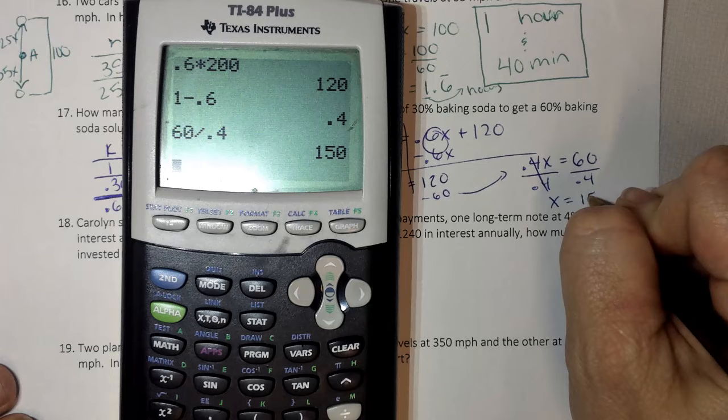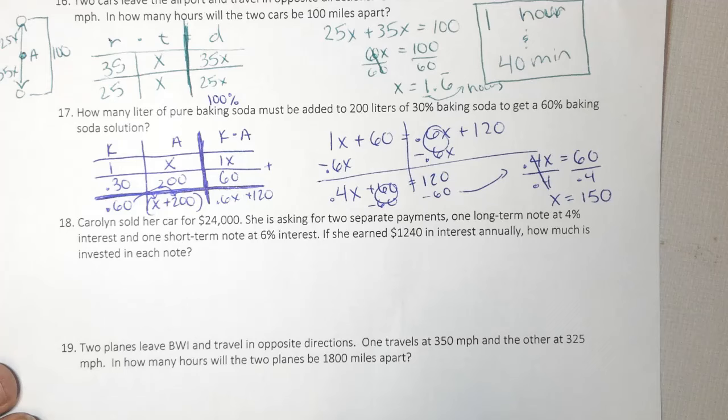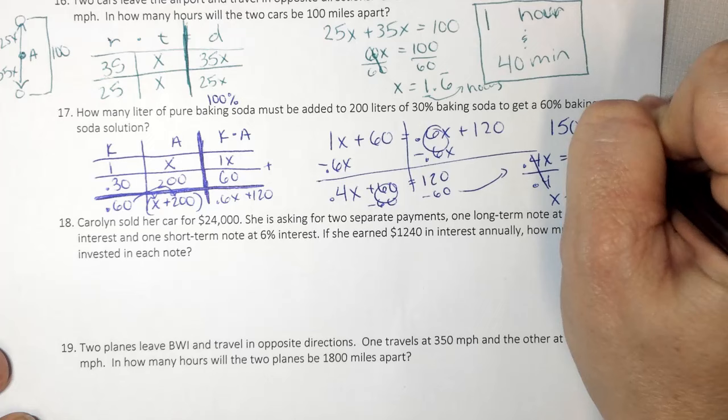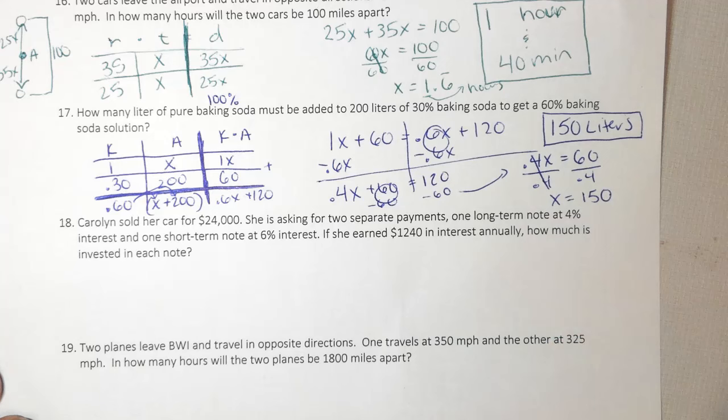Now I have to go back and read the question. How many liters of pure baking soda must be added to 200 liters? So I want to know how much pure, which is 150 liters. Now what if it asked me how much 60% did I create? You would come here. X plus 200. 150 plus 200 is 350. That would be your answer. Make sure you're reading the question.